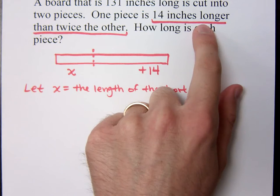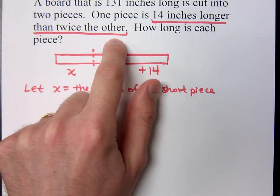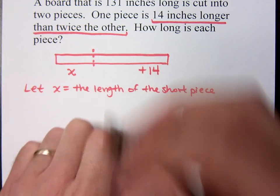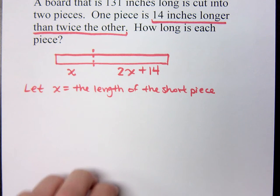It's 14 inches more than what? Twice the other guy. So how would I represent twice the other guy? 2x. I'd represent it by saying 2x. Now what am I going to do with the x and the 2x plus 14? I think, Greg, you're on the way of saying something. Now it's going to be x plus 2x plus 14 equals 131.